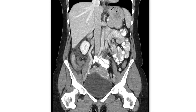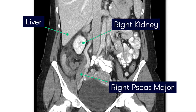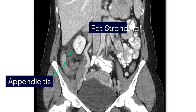Looking at this coronal image, we can see that it shows an appendicitis in a retrocecal position, but also slightly paracecal, with a distended lumen and also some adjacent fat stranding, which signifies some oedema as a result of the inflammation.